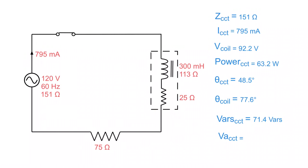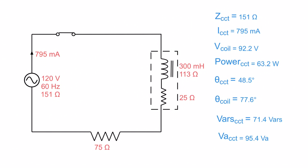Finally, apparent power in VA. Our total circuit impedance is 151 ohms, so I²Z: 0.795 squared times 151 gives 95.4 VA. You can double-check by multiplying current times source voltage — 0.795 times 120 volts — and you get the same answer. So we have 95.4 VA of apparent power. Once you break these circuits down into components, it's not that difficult. Next time we'll cover power factor, and eventually parallel circuits.